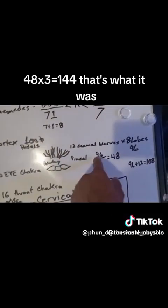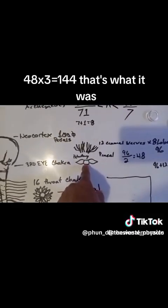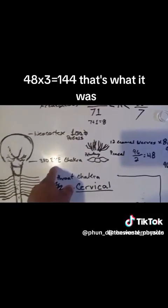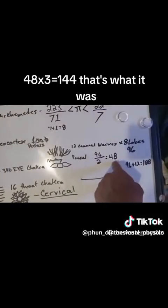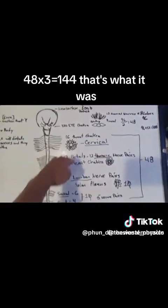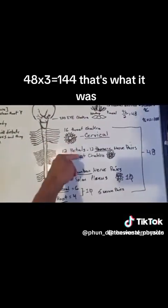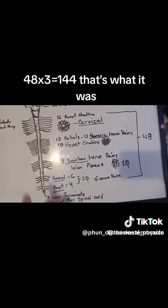Now, 96 divided by 2 because there's two petals on the third eye chakra. Now these two petals, I believe, are the pituitary gland and the pineal gland. You get 48. Now, overall, when you add the throat, thoracic, lumbar, sacral and root, you'll get 48.